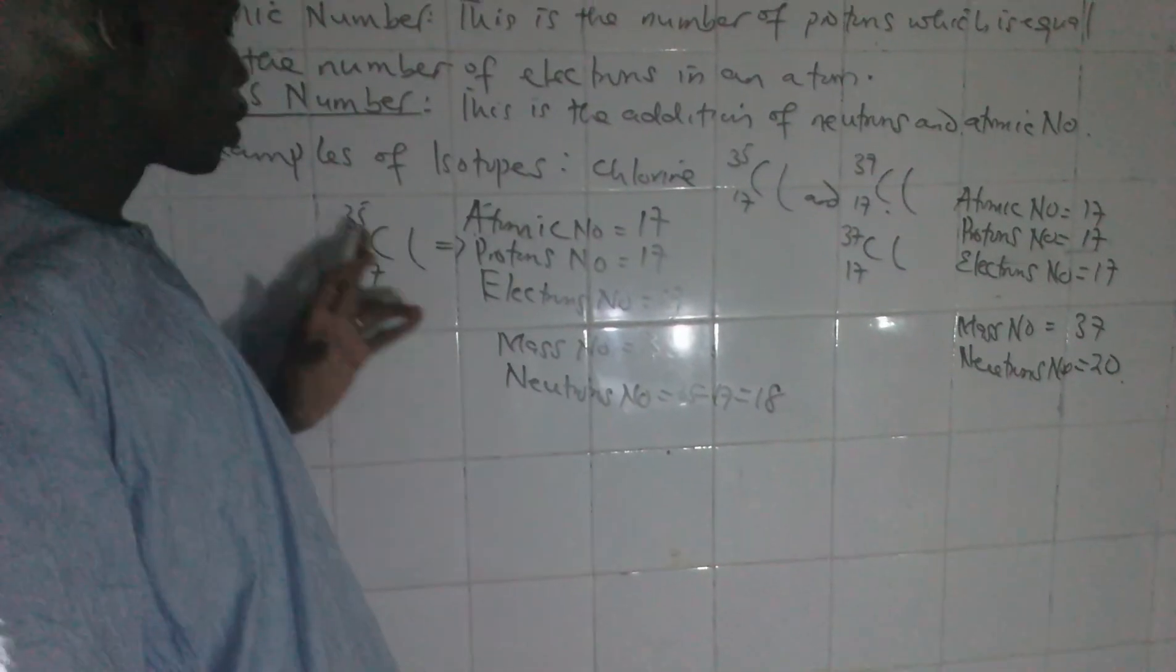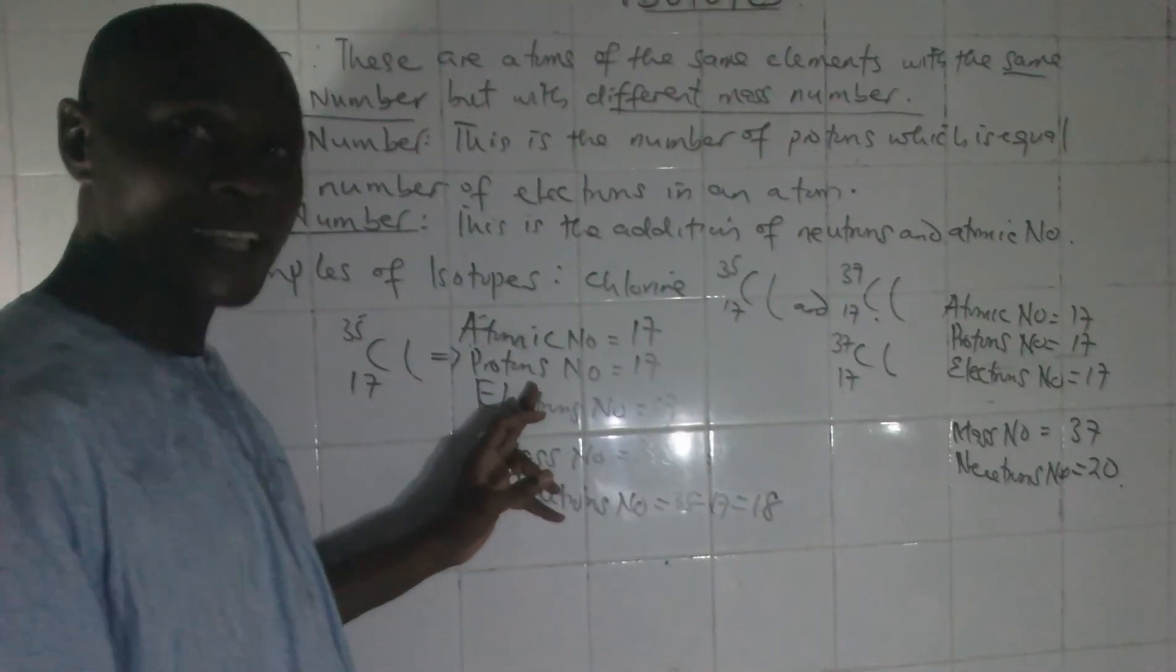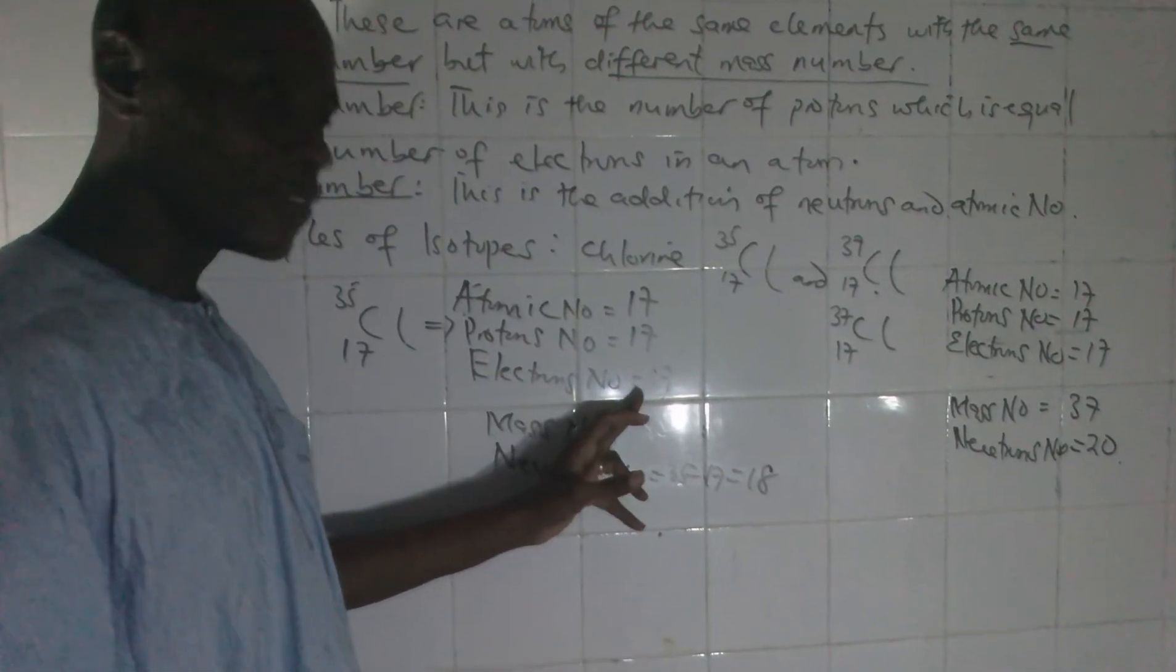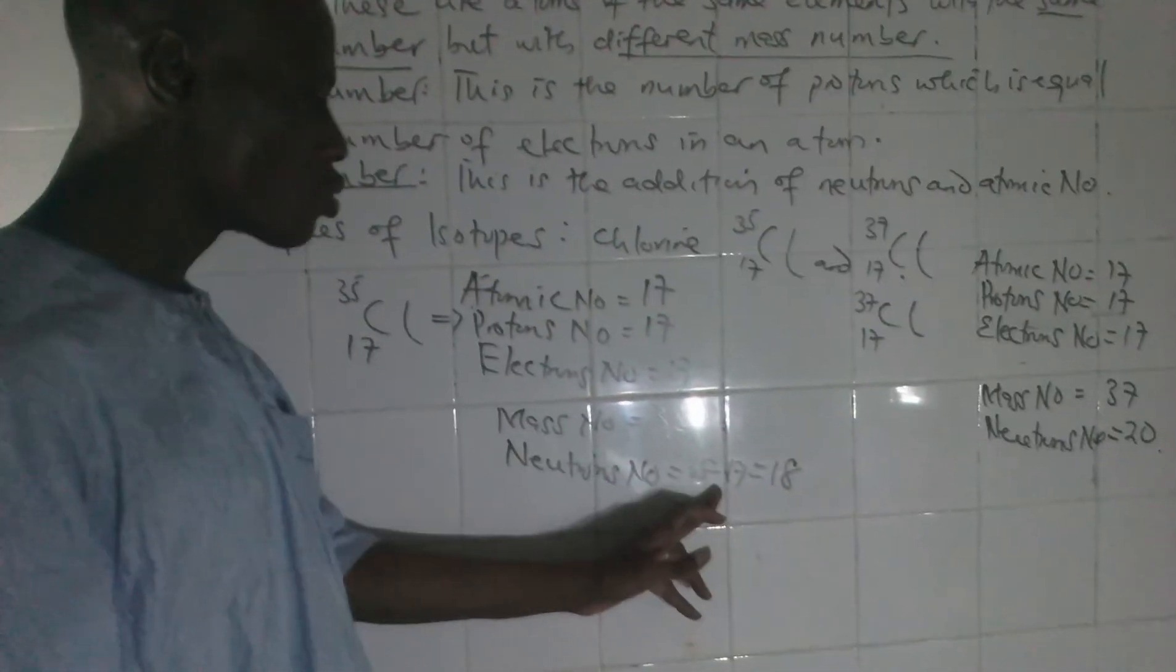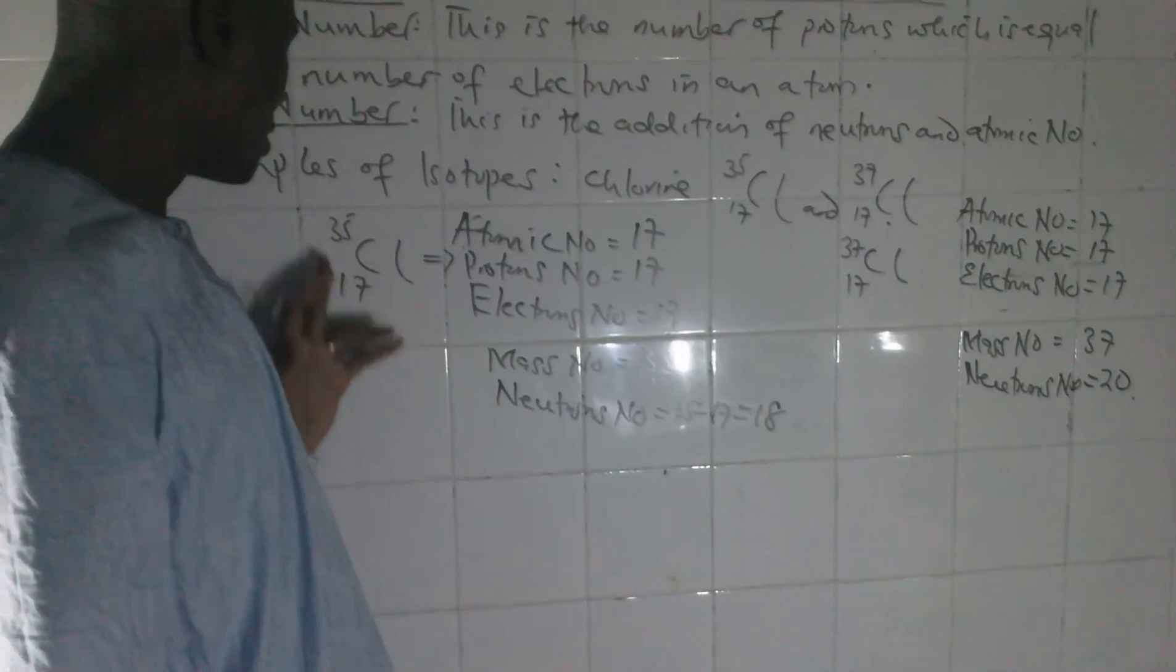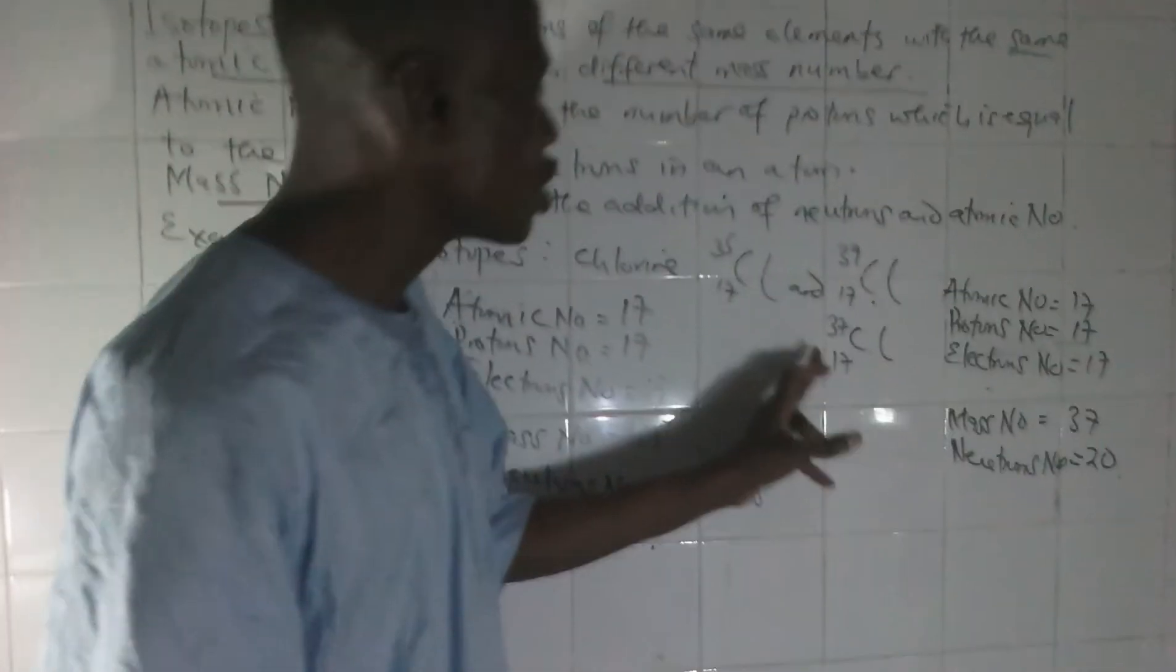So if you look at the analysis for chlorine 35, atomic number is 17, protons number is 17, electron number is 17, mass number is 35, and the neutrons is 18. What about this one?